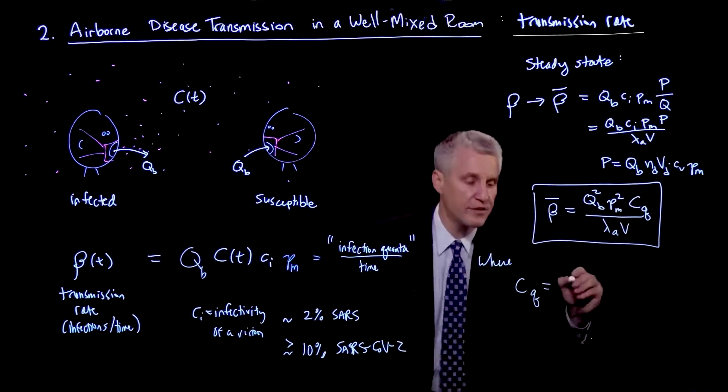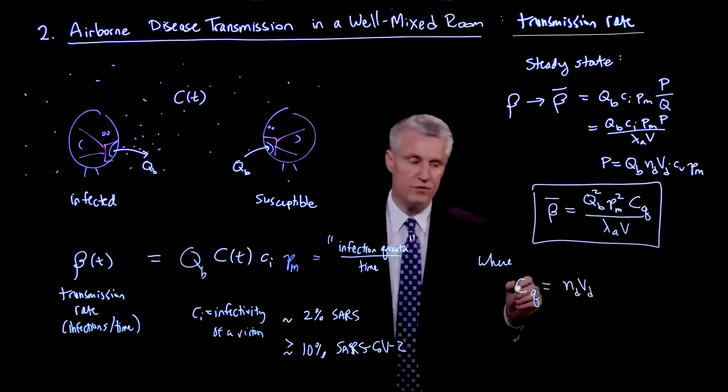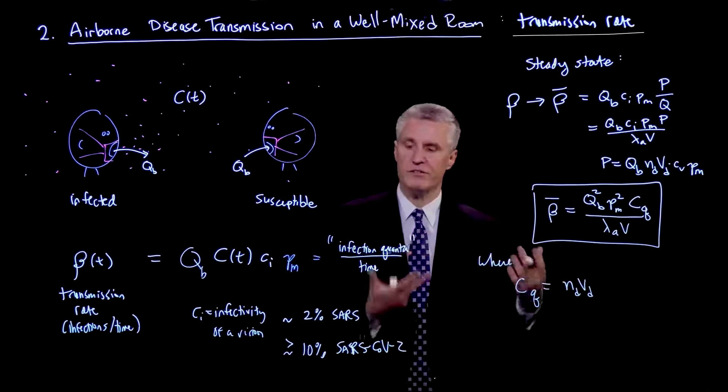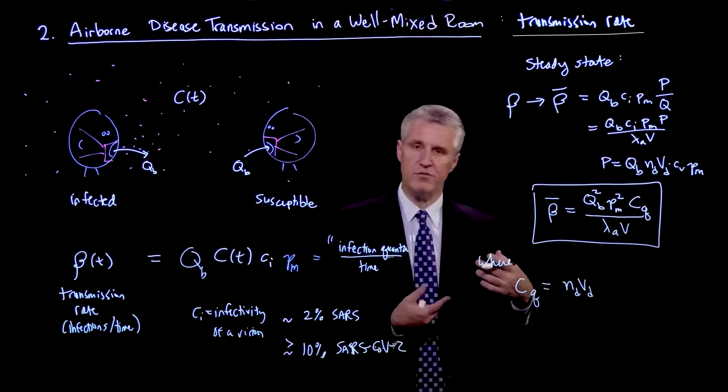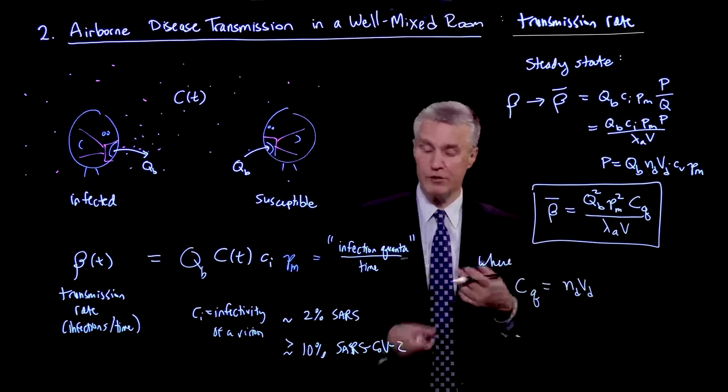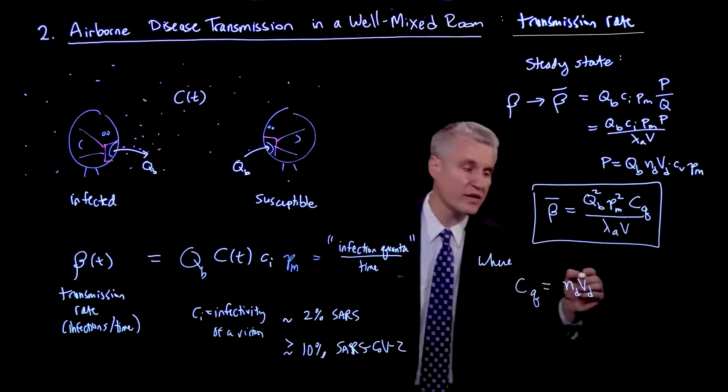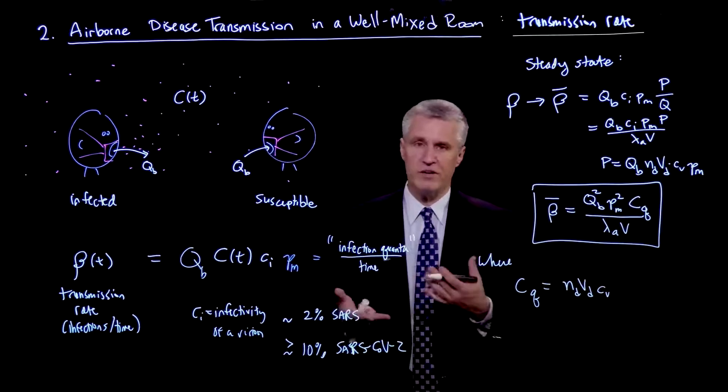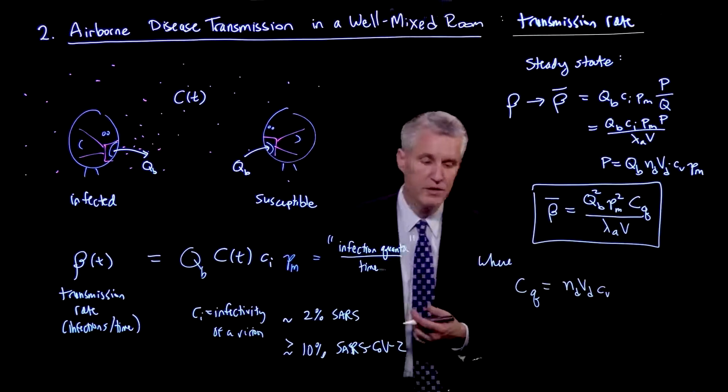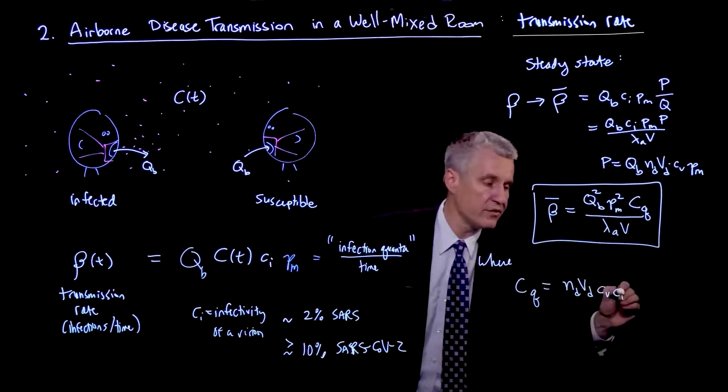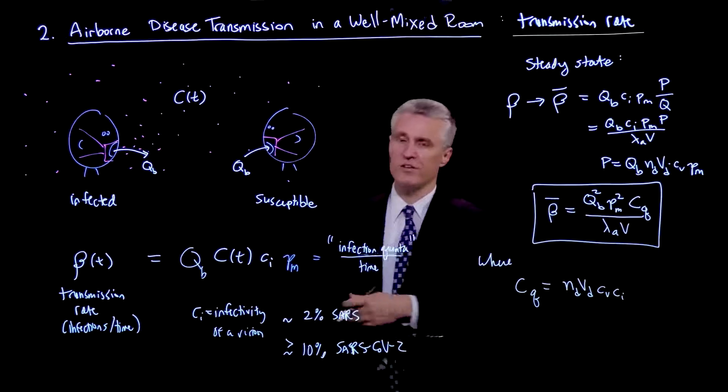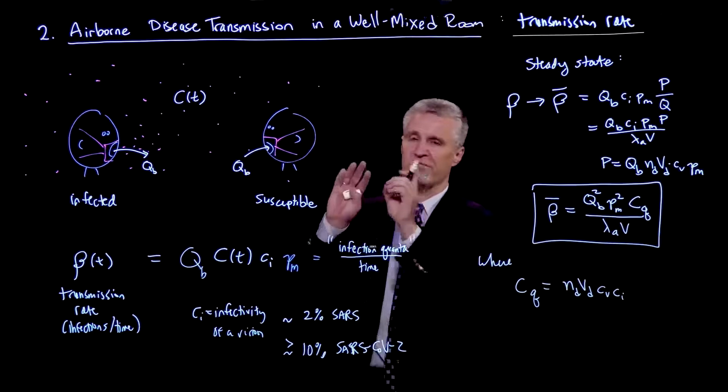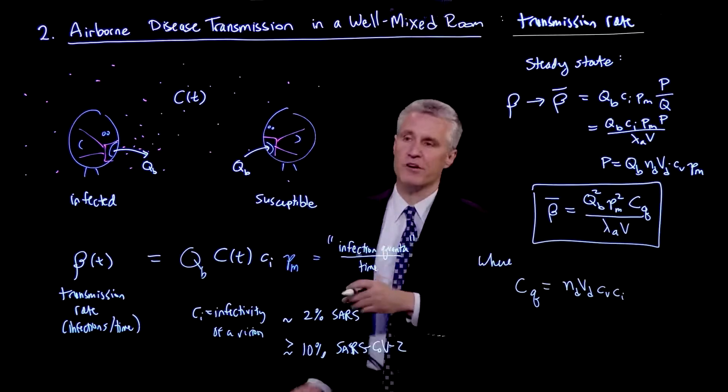Now, what is it? It's everything else that's left. It's NDVD, so that has to do with respiration. So the distribution of droplet sizes and the size of the droplets is something that's coming from the type of respiration that the infected person is engaging in. CV is their viral load, so it has to do with the progression of their disease and how many viruses or virions are found. And then we have CI, which is this infectivity, the probability that any one of those virions will actually infect the susceptible person if it manages to get in there and diffuse out of the droplets.